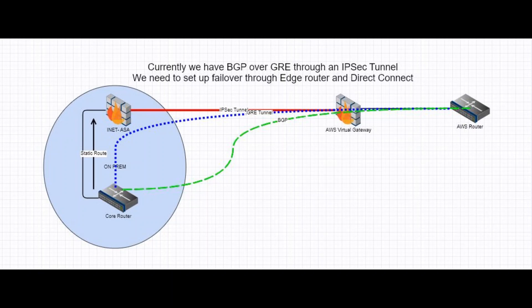On the Transit VPC, we have the routing table with a /32 IP pointing towards the AWS Virtual Gateway. From the AWS Virtual Gateway, through the site-to-site VPN, traffic goes over to INIT ASA. So at a low level, these are the components: the IPsec tunnel between the two infrastructures facilitates a GRE tunnel between the core router and the AWS router, and through this logical GRE tunnel we are running BGP.